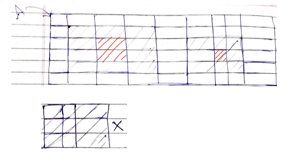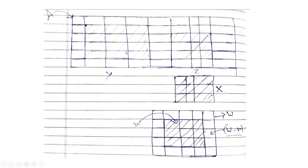To determine the position of an object more accurately, we can also consider the background of X. Here we are only considering the structuring element itself. If we also consider the background of X, we will fit that background with the background of the original image A. Wherever the background fits with the complement of image A, and simultaneously the object fits with the object part of image A, that common intersection part will be the exact location of our object.